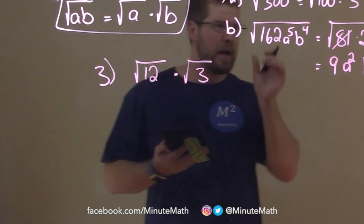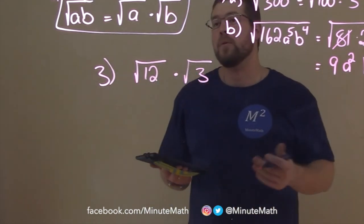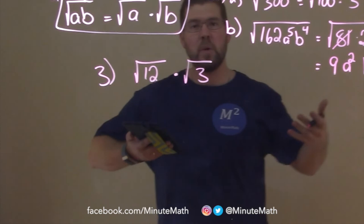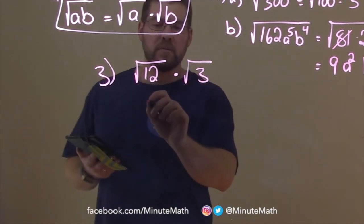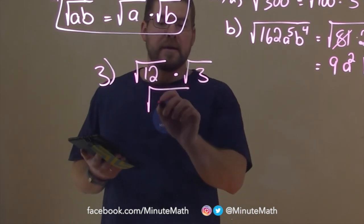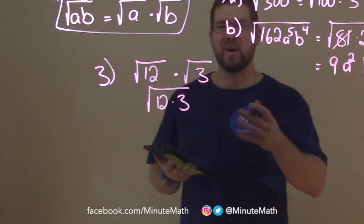And notice the multiplication is on the outside, and so our rule states that these two parts are equal. So we could combine them to one square root, or radical, and that might be easier there. So our rule states that we can write it like this. The square root of 12 times 3, all under one square root.